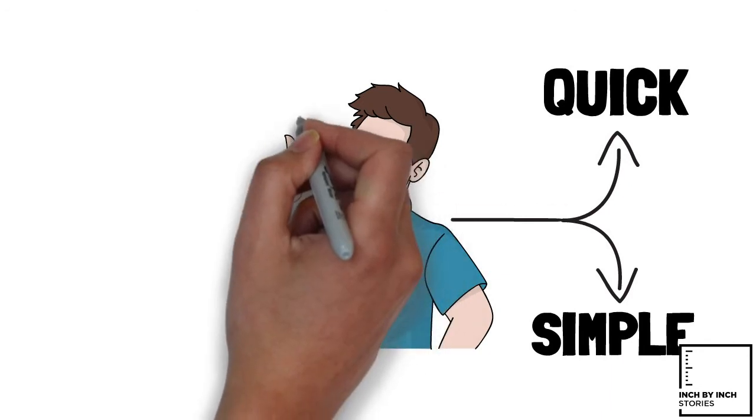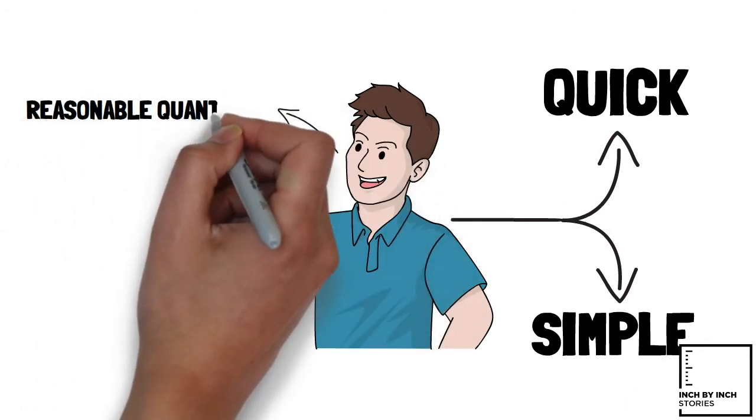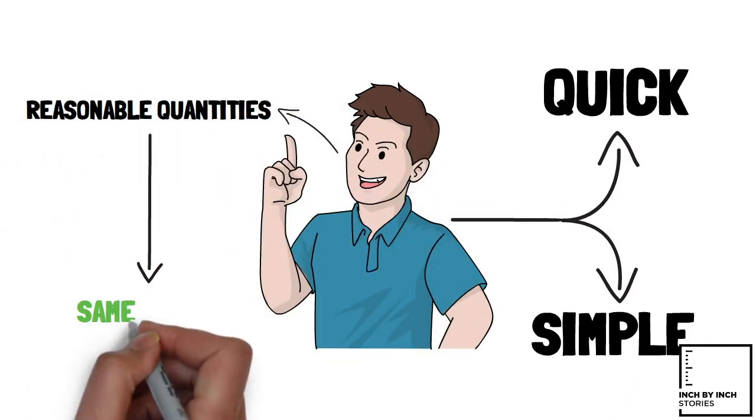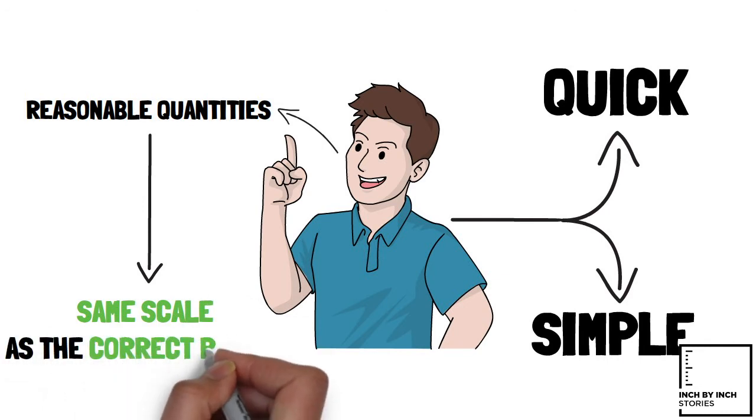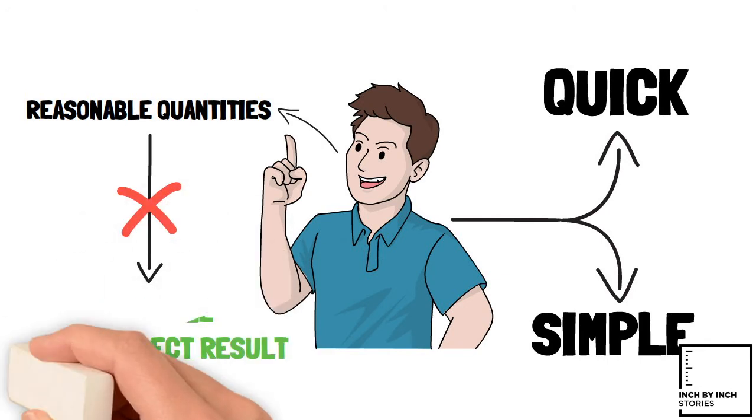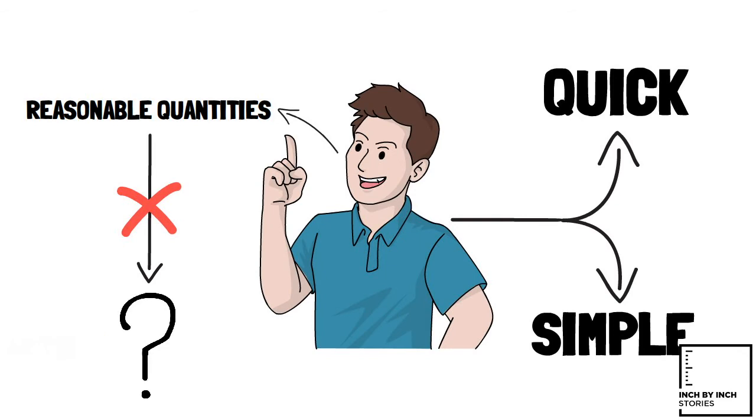As long as the initial assumptions in the estimate are reasonable quantities, the results obtained will give an answer within the same scale as the correct result. And if not, it gives a base for understanding why this is the case.